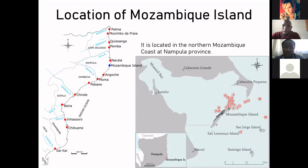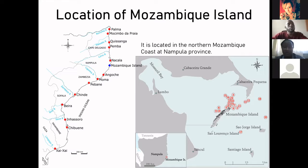Before I go further with the results of my investigation, I have to contextualize you about the geographic area where Mozambique Island is located. As its name suggests, it is in the country called Mozambique, but this name comes from a very long history. This island is very small and is located in the north of Mozambique, in Nampula province. It is just three kilometers long by 500 meters wide.